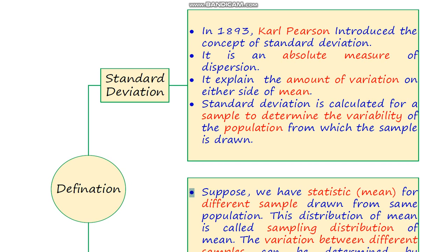Suppose we have a random variable denoted by x and it constitutes 10 values. This sample is drawn from a population and we have a question to determine the variability among sample observations. We can do this with the help of standard deviation.